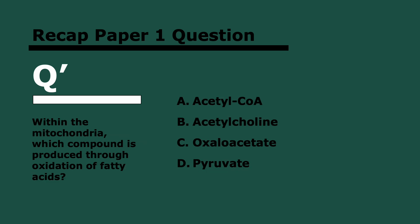Next question: within the mitochondria, which compound is produced through oxidation of fatty acids? The answer is acetyl-CoA. Remember, fatty acids and lipids are oxidized to form acetyl-CoA — not pyruvate, because then you could do anaerobic respiration, which you can't with lipids. Not acetylcholine, because that's a neurotransmitter. And not oxaloacetate, because that's part of the Krebs cycle.